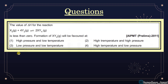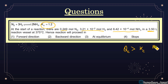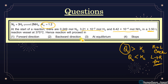Next question: N2 + 3H2 → 2NH3, and Kc = 1.2 is given. At the start of the reaction, the initial concentrations of N2, H2, and NH3 are given in a certain volume. We need to find Qc first. If Qc > Kc, the reaction moves in the backward direction (right to left). If Qc < Kc, the reaction moves in the forward direction (left to right).